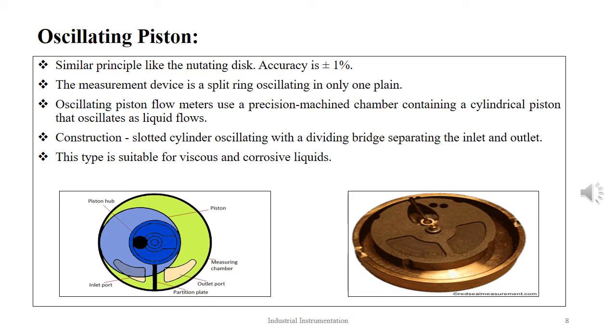Initially, the piston rests at the central position. As fluid enters the section, the ring starts rotating from left to right until the fluid is escorted to the outlet. The rotation of the piston is transmitted through a diaphragm to the gear train and is registered. This type is suitable for viscous and corrosive liquids and the accuracy offered is ±1%.